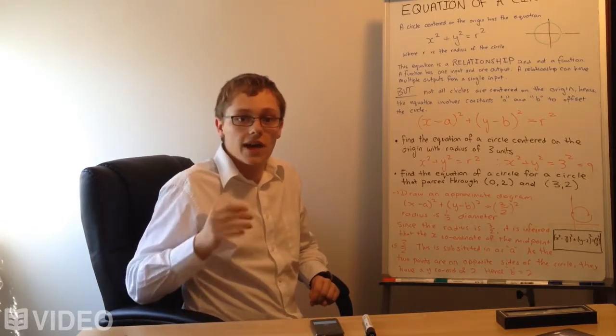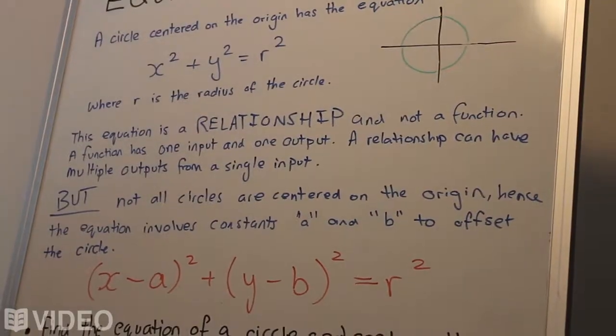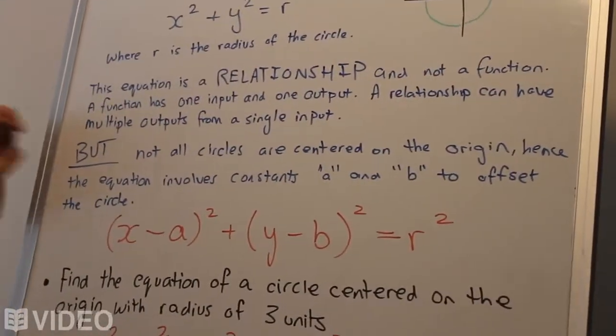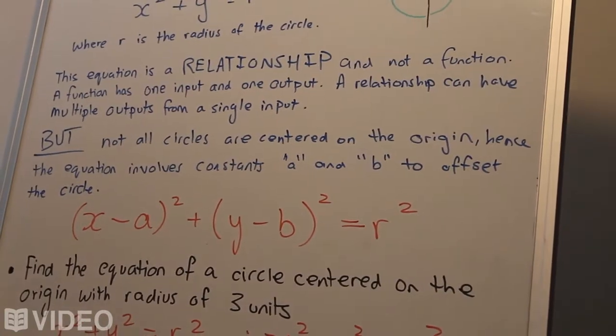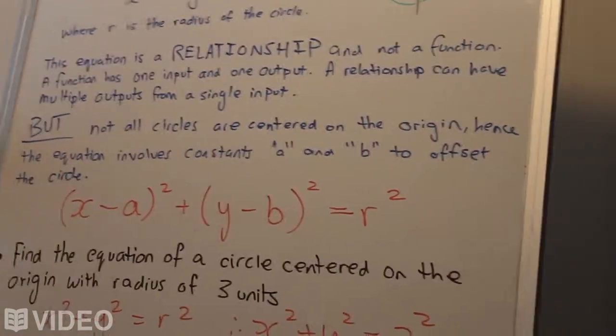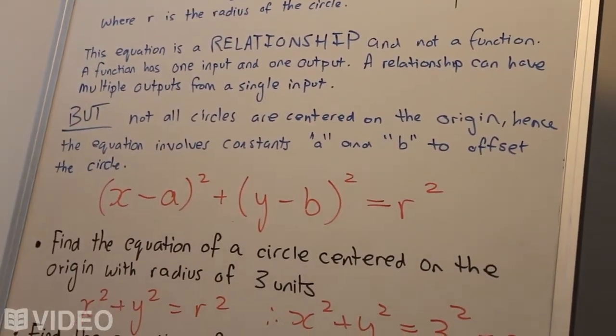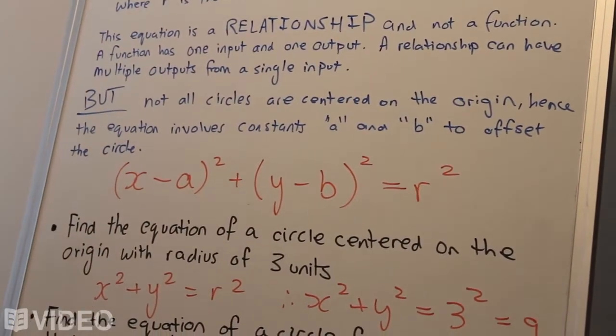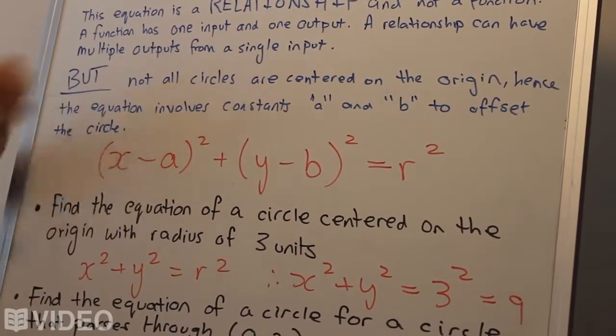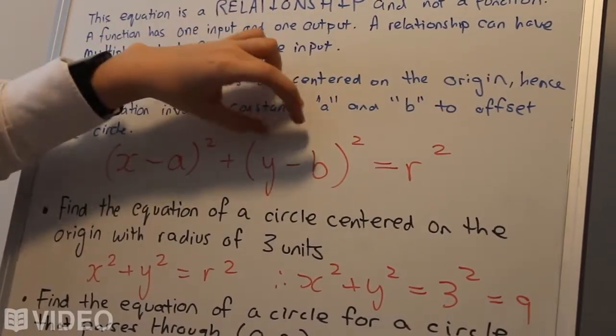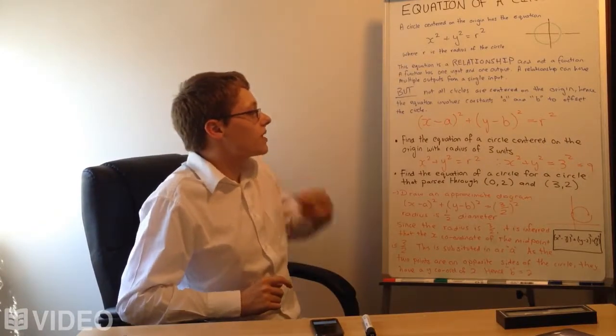So just try putting a vertical line through them. If it's only one, it's a function. If it's more than one, then you've got a relationship. But here's the next part, not all circles are centered on the origin. And this is why the equation is actually slightly longer. The equation involves constants a and b to offset the circle from the center. And essentially, a and b offset it by a certain amount related to the origin. So we have x take a squared, and that entire term is bracketed, plus y take b, with y take b bracketed, squared, equals r squared, as being the key function to remember.